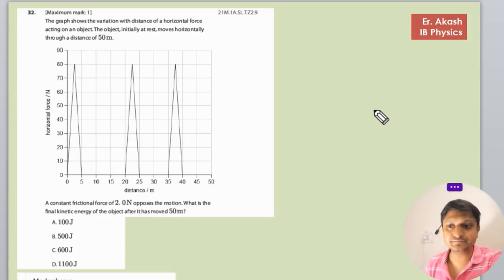Champions, how are you? So there's another question. The question says that the graph shows the variation with distance of a horizontal force acting on an object. So there's an object.